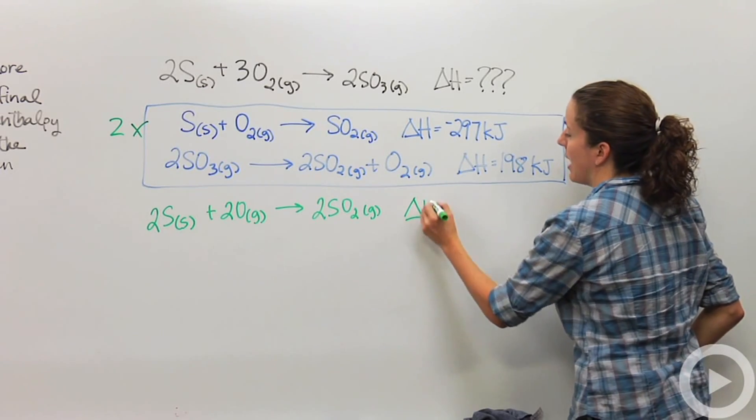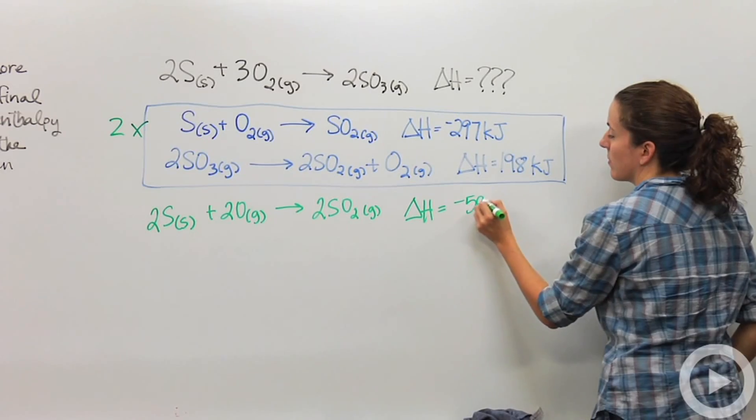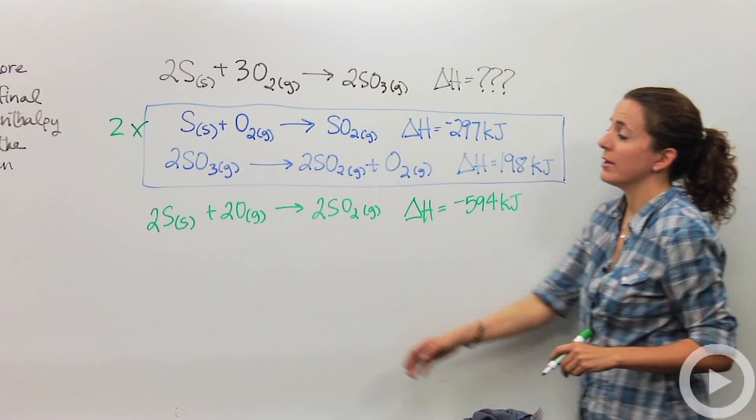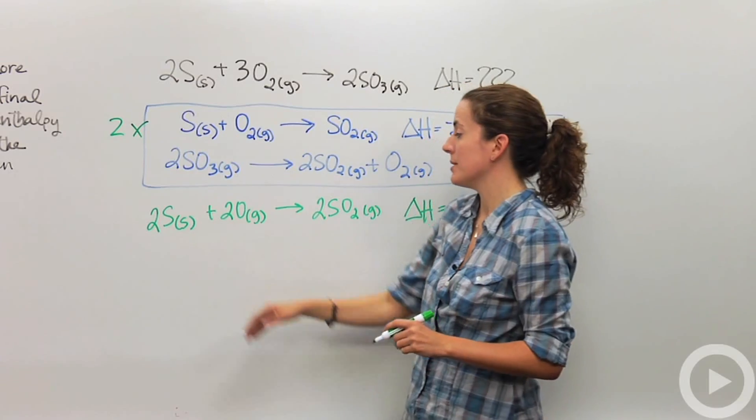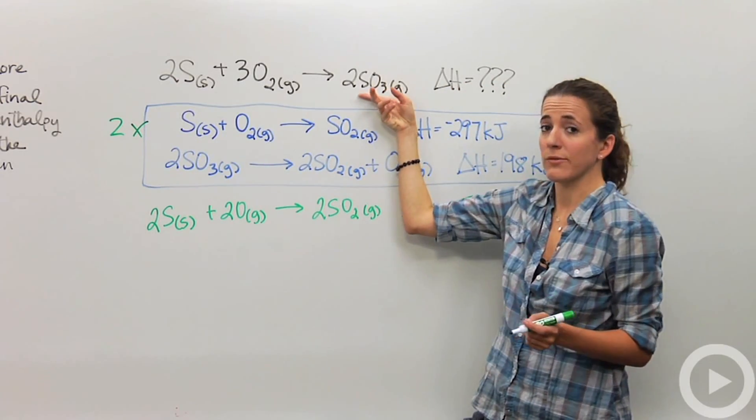So my delta H is now going to be negative 594 kilojoules. Okay great. So now I have my two moles of sulfur on my reactant side. That's awesome. But now I have sulfur dioxide on my product side and I don't want it. I want sulfur trioxide.